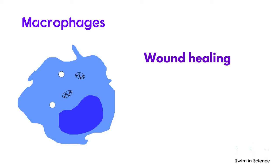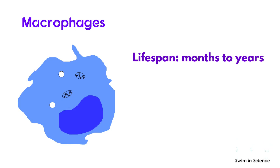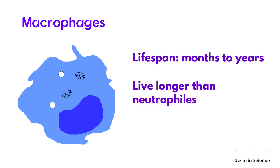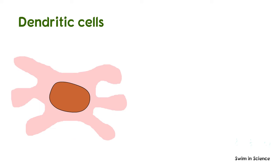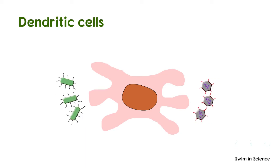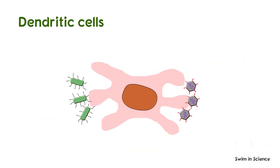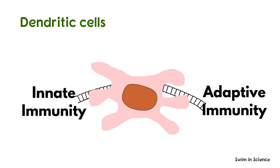Macrophages are involved in wound healing, tissue regeneration, and pro-inflammatory activities. Their lifespan varies from months to years. Macrophages live longer than neutrophils and are especially important for slow-growing or chronic infections. Dendritic cells are present in tissues like skin, lungs, and intestines. They can easily identify threats and act as messengers for the rest of the immune cells. They are indeed considered a bridge between innate and adaptive immunity.